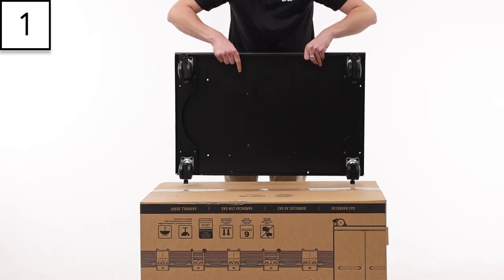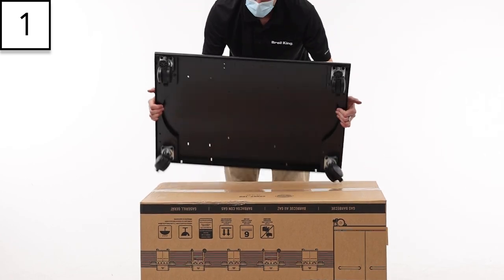Flip the base right side up and install the door catch magnets on the front edge.